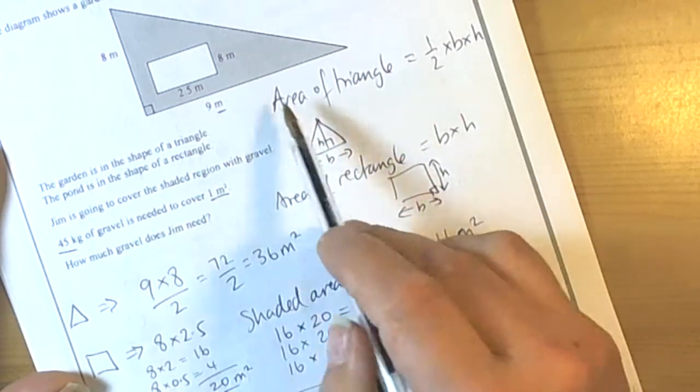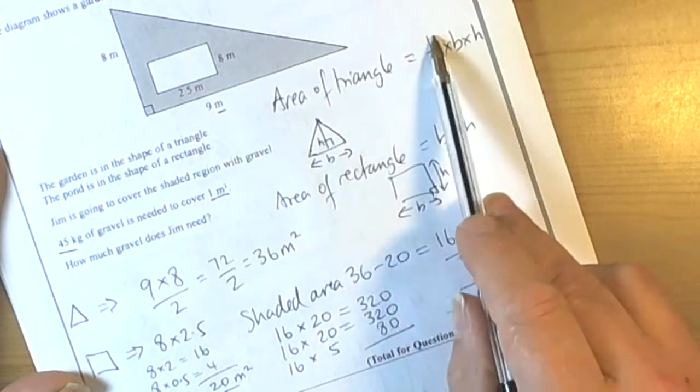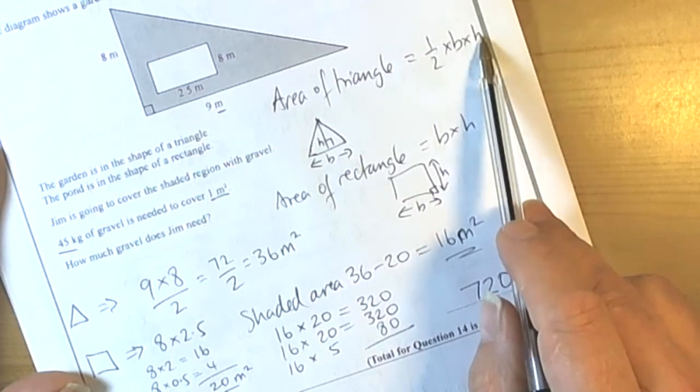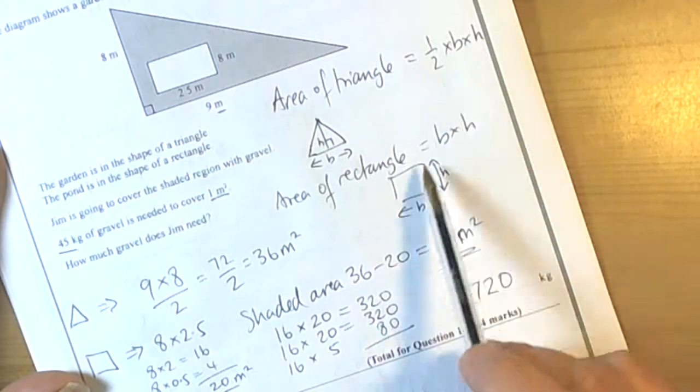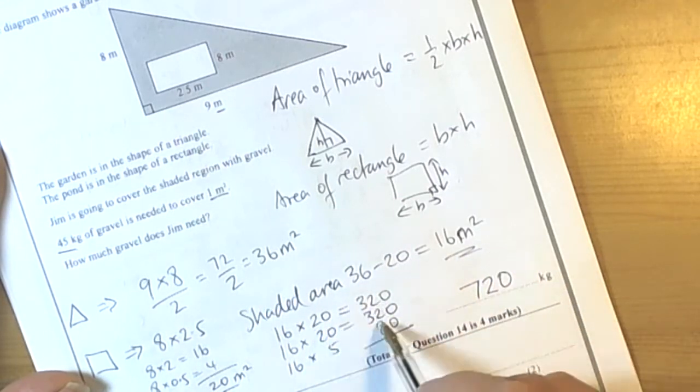So key things. Formulas for questions involving area. So know your formula. Area of a triangle 0.5 times the base times the height, where the height is measured perpendicularly. And the area of a rectangle base times height. Work out the areas carefully. And then do your sum to work out the amount of gravel for this particular question.